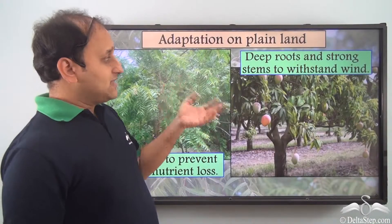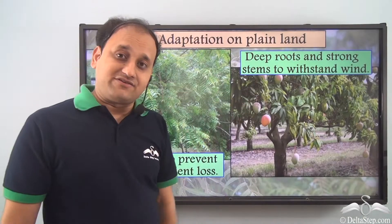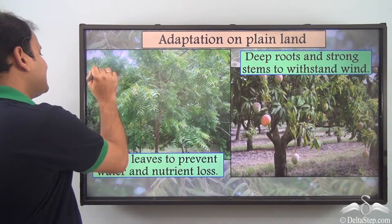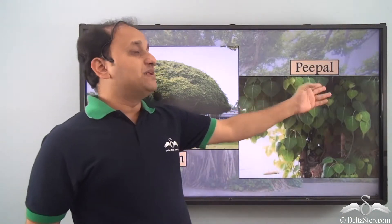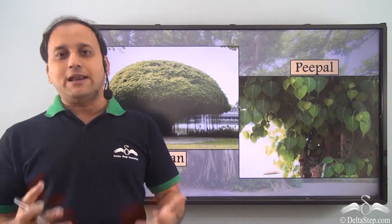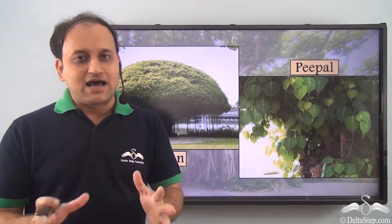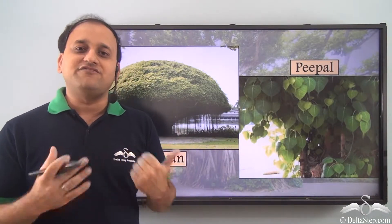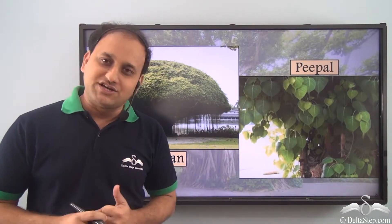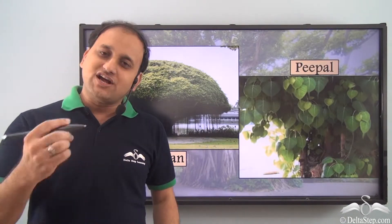Plants on plainland survive with these characteristics. Common examples of such adaptations on plainland are the banyan tree and the peepal tree. This is how plants adapt to different regions and different geographic conditions and survive in such conditions.